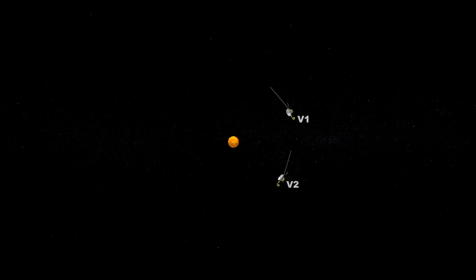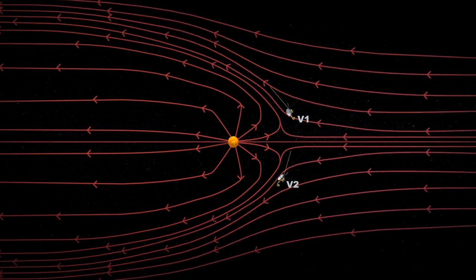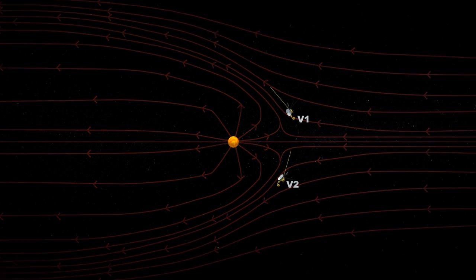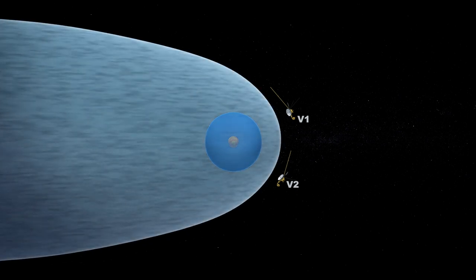Live Science reports that Voyager 2 detected a fiery plasma wall in the heliopause, where the Sun's outward-blowing solar winds clash with cosmic rays. This barrier protects the solar system by repulsing and weakening cosmic rays.